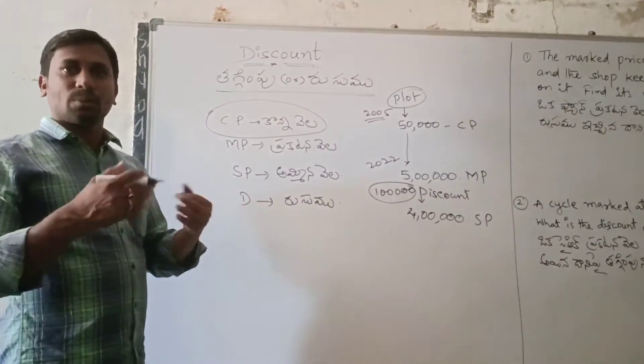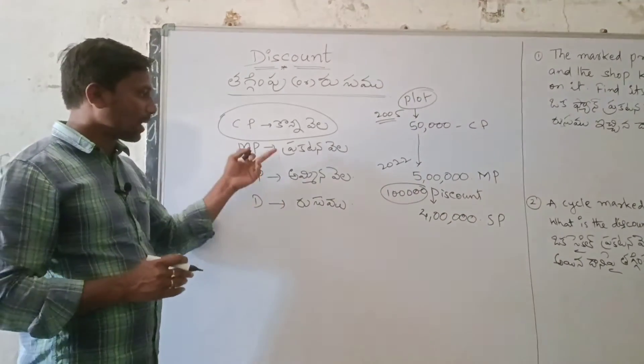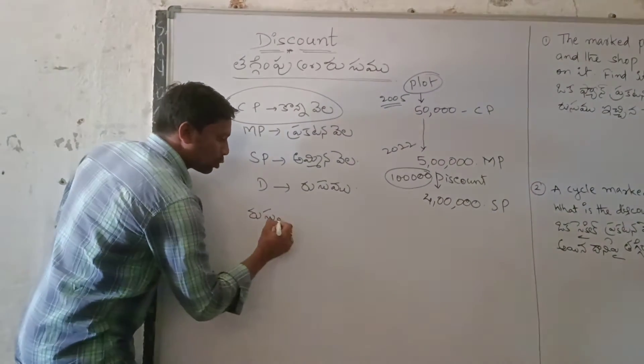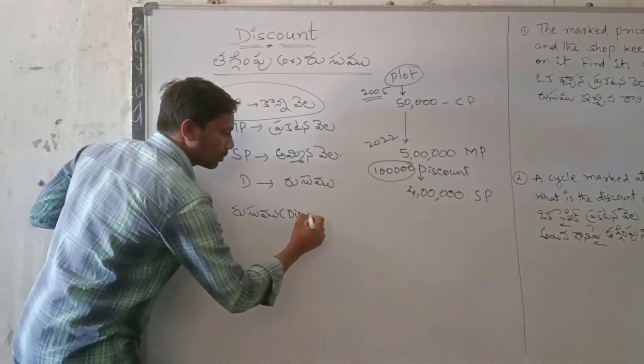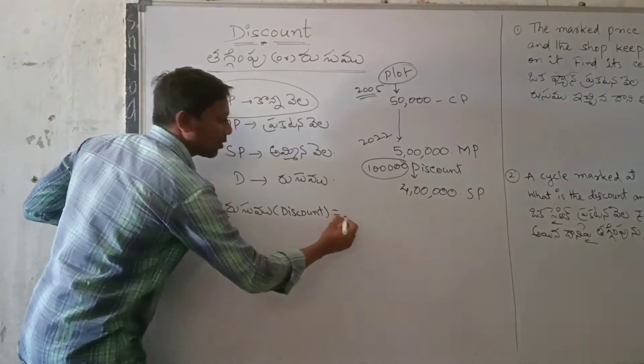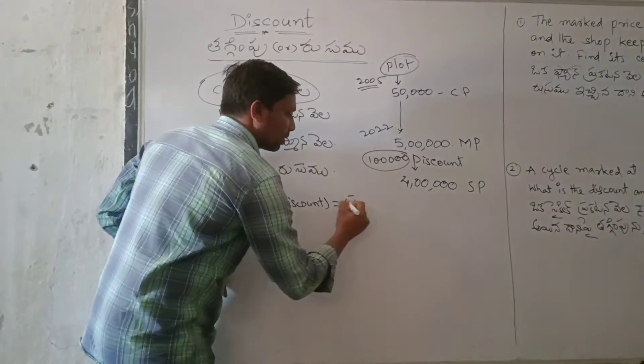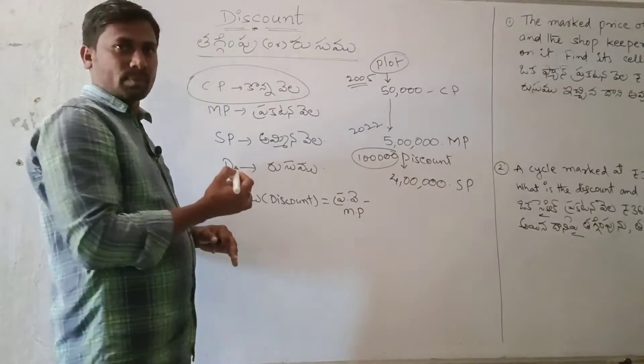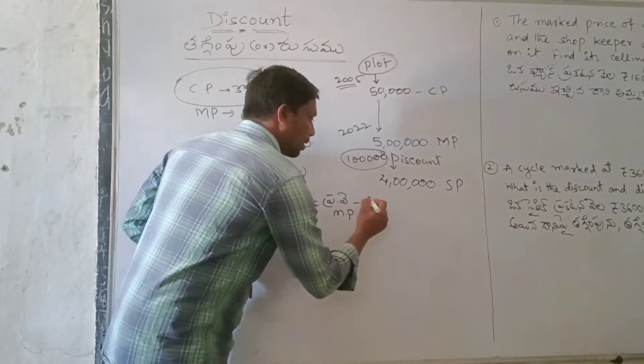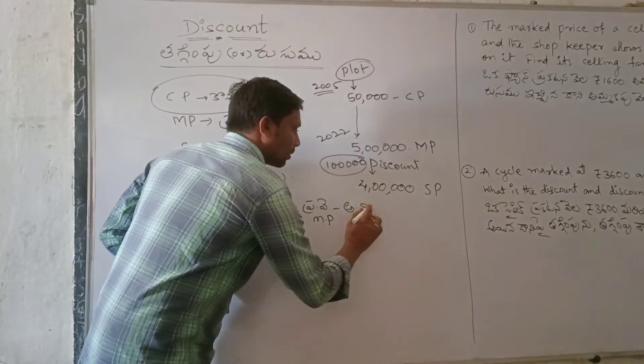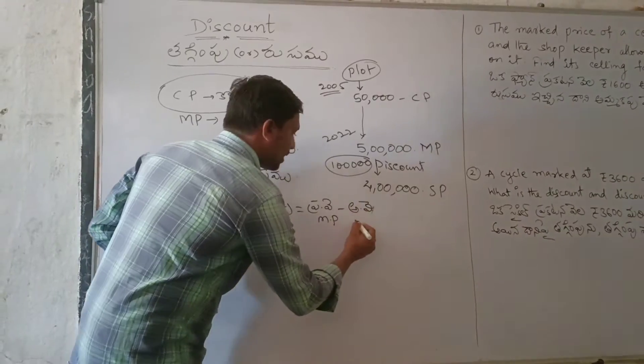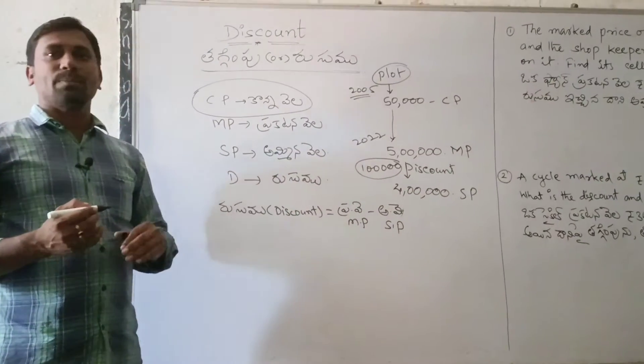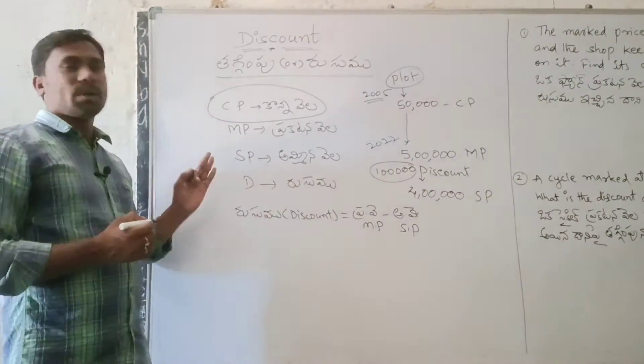Discount. What is Ambinavila? Ambinavila, Prakatanavila. This is Roosu. Discount is equal to Prakatanavila, marked price minus Ambinavila, selling price. Discount equals marked price minus selling price.